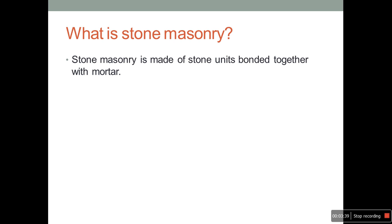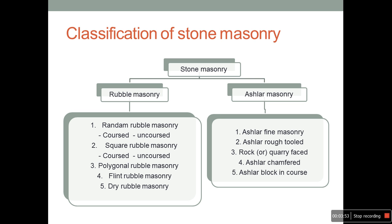When we see the definition of stone masonry, as we have already seen from Wikipedia, it means stone units bonded together with mortar. It can be a lime mortar and also can be a cement mortar.